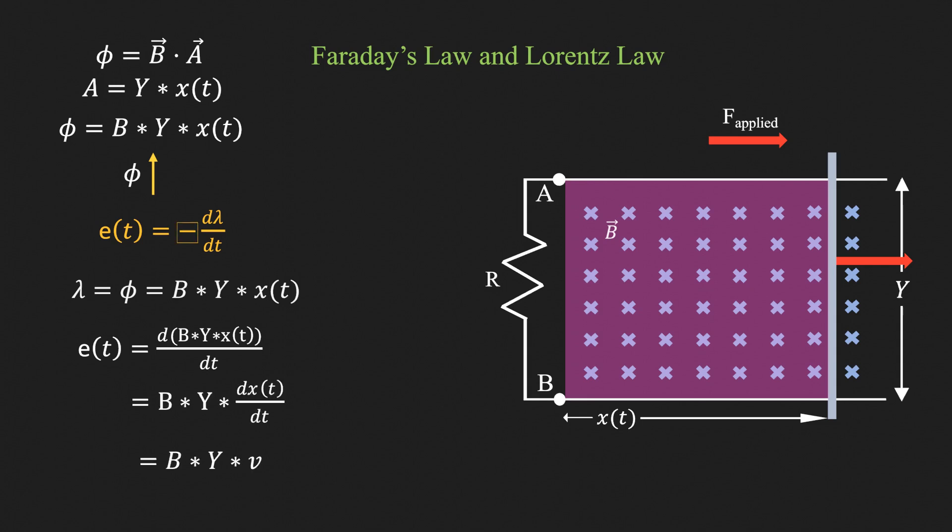The negative sign tells us that the voltage induced is going to counter the change of field. Since we are increasing the flux by increasing the area of the loop, the current direction should be such that it will decrease the flux.